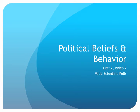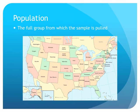Welcome back to Political Beliefs and Behavior, Unit 2, Video 7: Valid Scientific Polls. If you've taken any stats course or research methods course, you've probably done this kind of thing. When conducting a survey, we need to make sure it's done properly. First of all, you have population—that's the full group from which the sample is pulled.